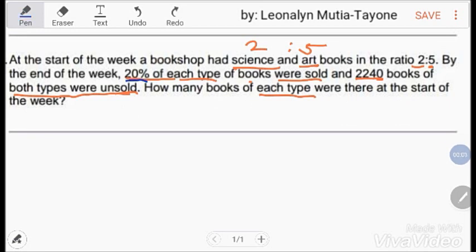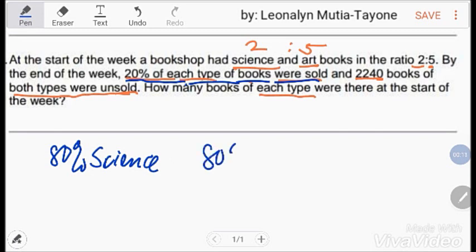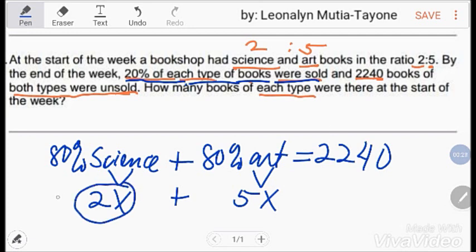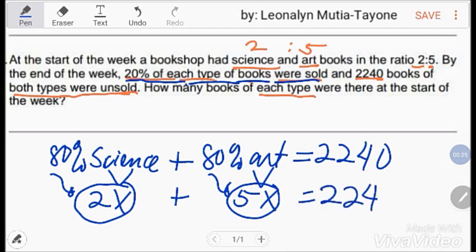Since 20% of each type of books were sold, that means 80% ng science at 80% ng art books. Ang total nila is 2,240. Itong science na ito is 2x plus itong art na ito, 5x. So, 2x, 80% sa 2x, and 80% sa 5x equals 2,240.